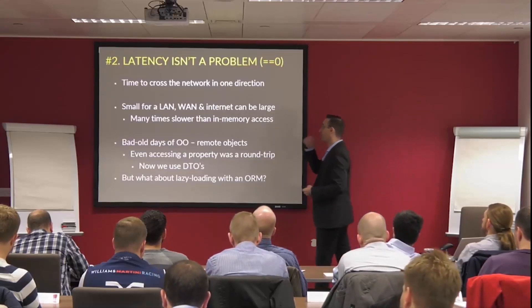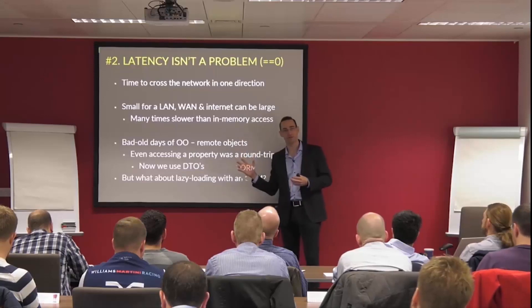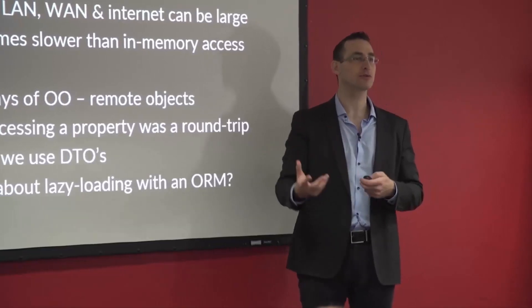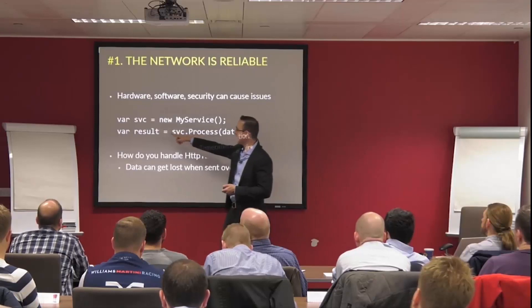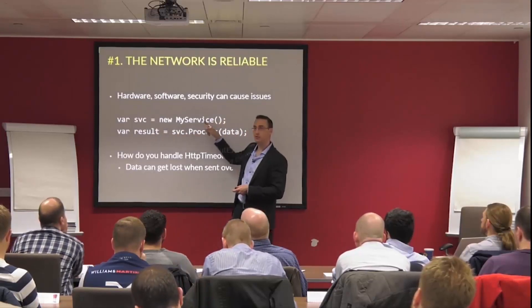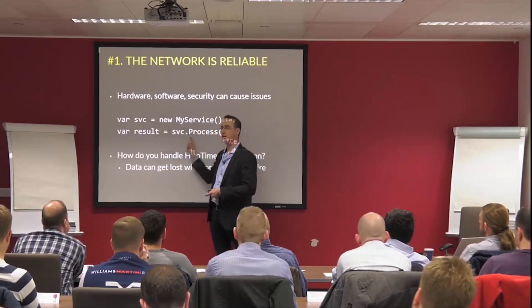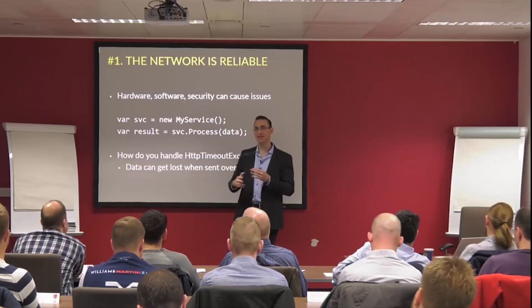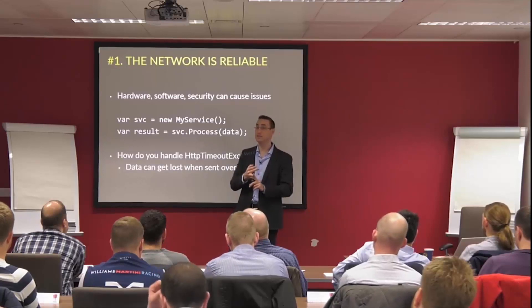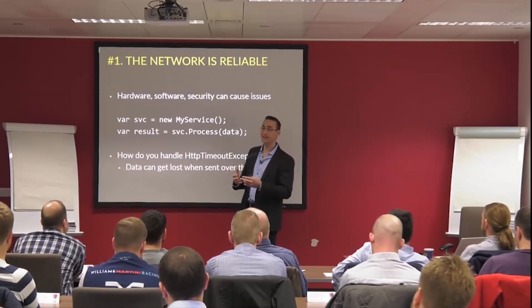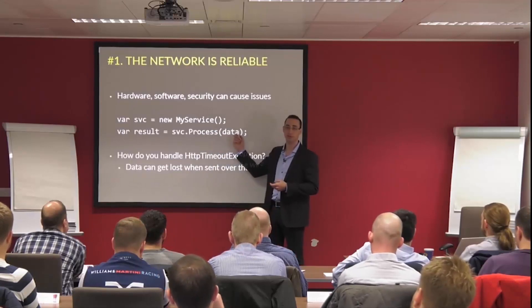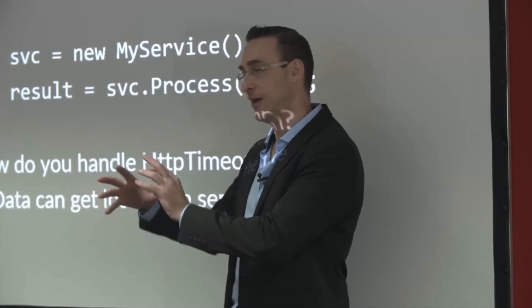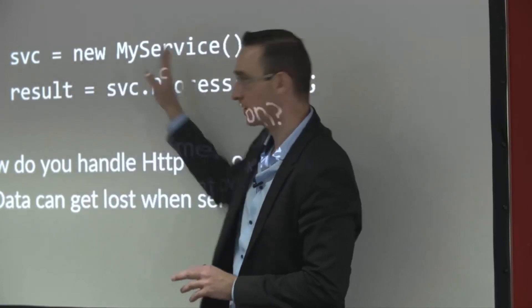When talking about network latency, it's the time to cross the network in one direction. Most developers are familiar with a concept called round-trip time — the time from invocation until we get a response. The reason we don't focus on round-trip time in distributed systems is because it intermingles serialization and deserialization, which have nothing to do with the network, and the actual processing time on the server. Latency specifically means: given that we've serialized everything and we're ready, how long does it actually take to get from the client to the server?